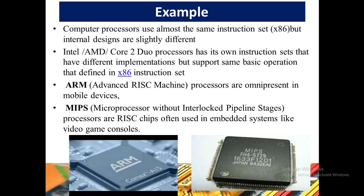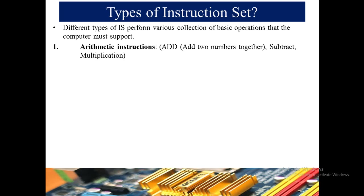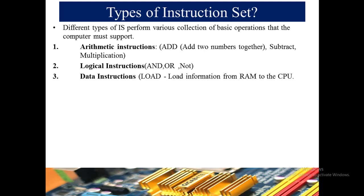The different types of instruction sets perform various collections of basic operations that the computer must perform. The first type is arithmetic instructions, which include add, subtract, multiply, increment, decrement, and all arithmetic operations. The second type is logical instructions, which perform comparison-type operations like AND, OR, and NOT. The third type is data instructions — the first data instruction is LOAD, which loads information from RAM or ROM to the CPU.